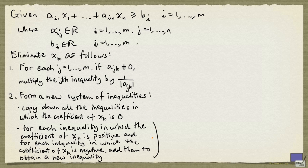And then, we are going to form a new inequality for each pair of inequalities, one with positive xk and the other one with negative xk. The new inequality is formed by adding these two inequalities.